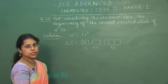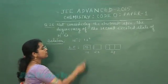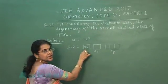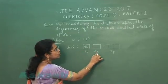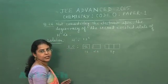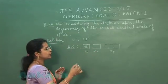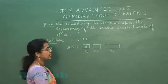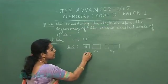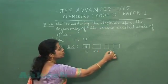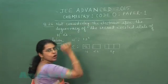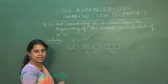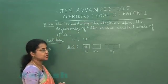In this question, if an electron is excited from 1s² to the 2s orbital, that would be called the first excited state. If it is excited to the 2p orbital, that would be known as the second excited state.